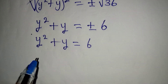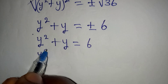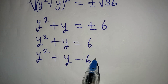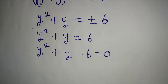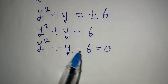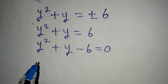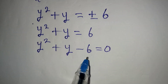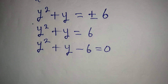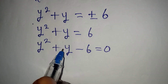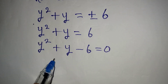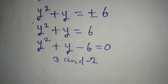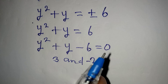From here we can say that y² + y - 6 is equal to 0. Now we will solve this quadratic equation using the factorization method. We need two numbers that multiply to give -6 and add together to give +1.